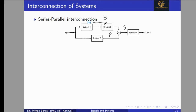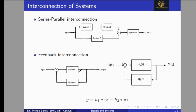Now we will talk about feedback interconnection. In feedback interconnection, the output of System 1 is fed back to the input through System 2. System 1 directly gives some output, but to verify whether we are achieving what we want, we use feedback. The output of System 1 is given as input to System 2, and it goes back toward the input side. Here h1(T) is the first system function, h2(T) is the second, Y(T) is the output, and X(T) is the input.